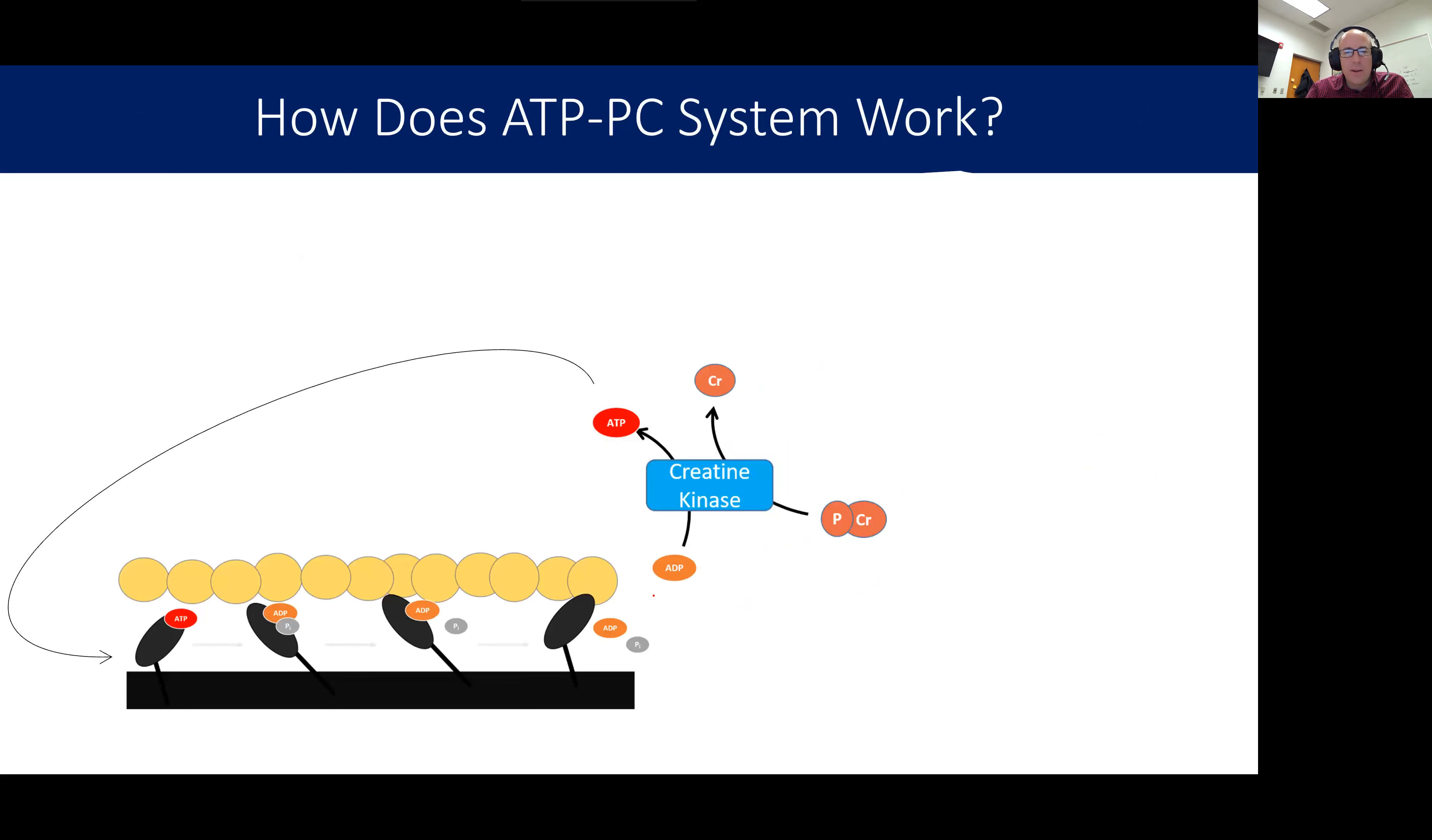Now, another system that we have is the creatine kinase system. And this creatine kinase system is going to work very similarly to the adenylate kinase system. It's going to transfer a phosphate off of one molecule onto an ATP to create ATP. But the enzyme here is different. This enzyme is creatine kinase. And you're going to take that ADP that you form through muscle contraction or from whatever. And it's going to meet up at the creatine kinase enzyme with an enzyme called phosphocreatine.